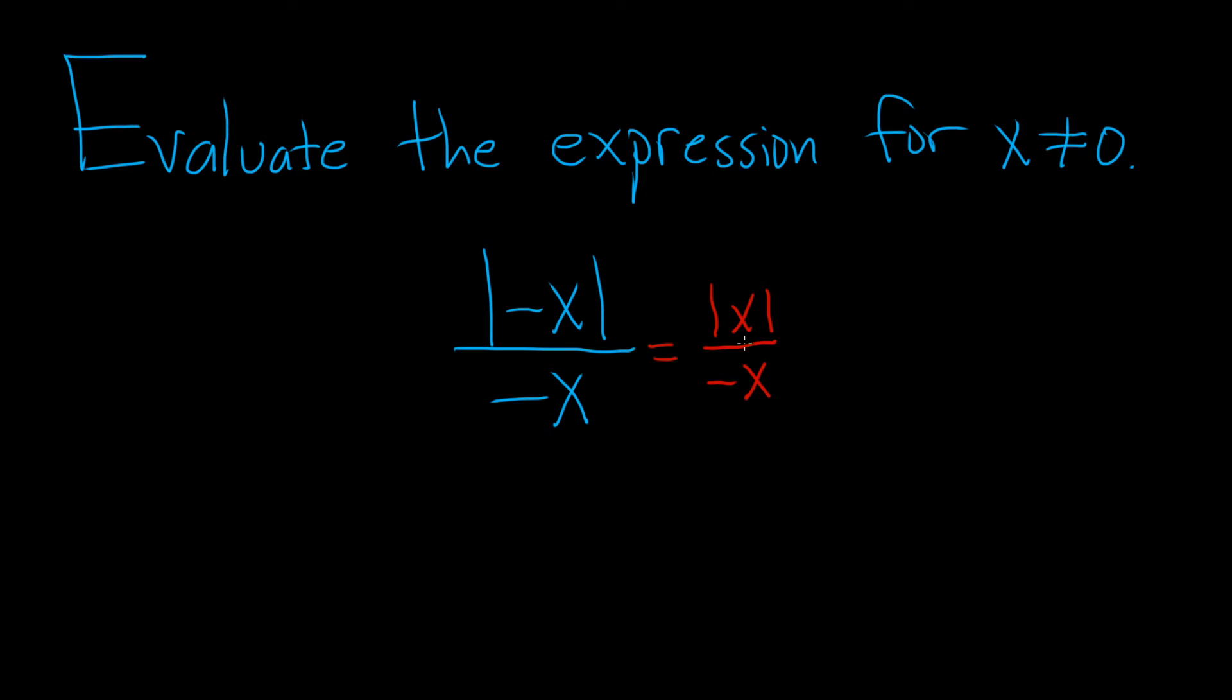So now we have to work this piece out. To do this, we're going to use the definition of absolute value. So the absolute value of x is equal to x, and this will be true if x is greater than or equal to 0. And the absolute value of x is equal to minus x, and this will be true if x is less than 0.